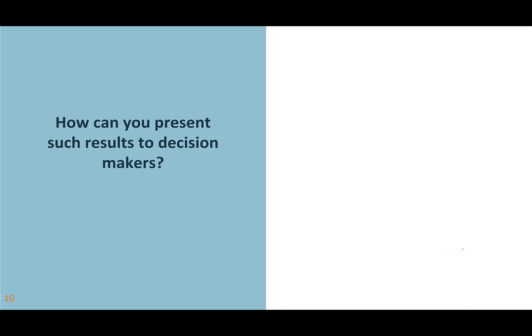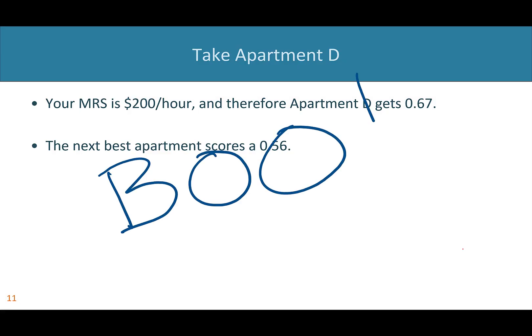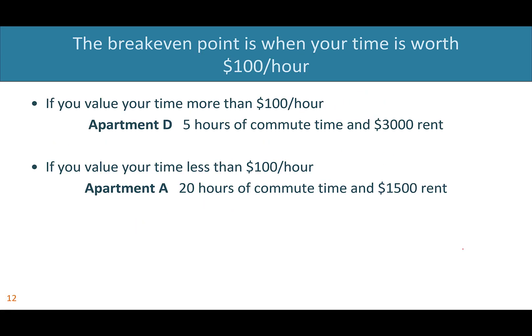Let's think about how to present results to decision makers, since this can be confusing. Here's what we don't want you to say: 'Your MRS value is $200 per hour, therefore apartment D gets a score of 0.67 and the next best is 0.56.' Those scores are meaningless to a decision maker who doesn't even know what MRS means. Here's something better: 'The break-even point is when your time is worth $100 an hour. If you value your time more than $100 an hour, go with apartment D — it has only 5 hours of commute time and costs $3,000 in rent. If you value your time less than $100 an hour, apartment A is better — it has 20 hours of commute time but only $1,500 in monthly rent.'